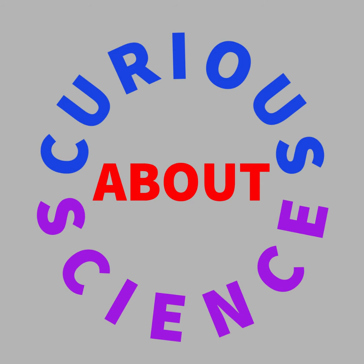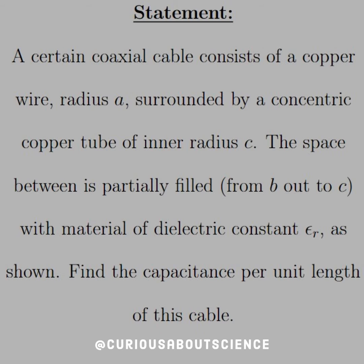Welcome back, curious people. The statement reads: A certain coaxial cable consists of a copper wire radius A surrounded by a concentric copper tube of inner radius C. The space between is partially filled from B out to C with a material of dielectric constant epsilon R, as shown. Find the capacitance per unit length of this cable.